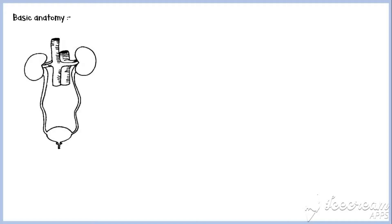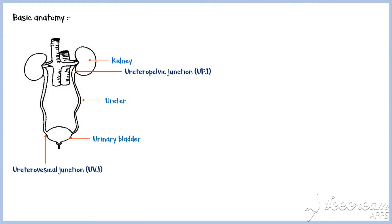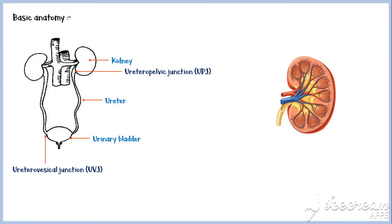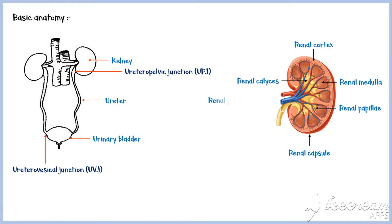Before we proceed, let's recall some basic anatomy of the urinary tract. Here we have the kidneys, ureters, and the bladder. Ureters join the renal pelvis of each kidney at the uretero-pelvic junction, and the junction at which ureters join the bladder is known as the uretero-vesical junction. Here we have a simple diagram of a kidney. The outermost connective tissue layer is the renal capsule, then the renal cortex. The renal medulla consists of renal pyramids containing the collecting ducts of the nephrons. Urine from the collecting ducts drains into the renal papillae and then into the renal calyces and renal pelvis.